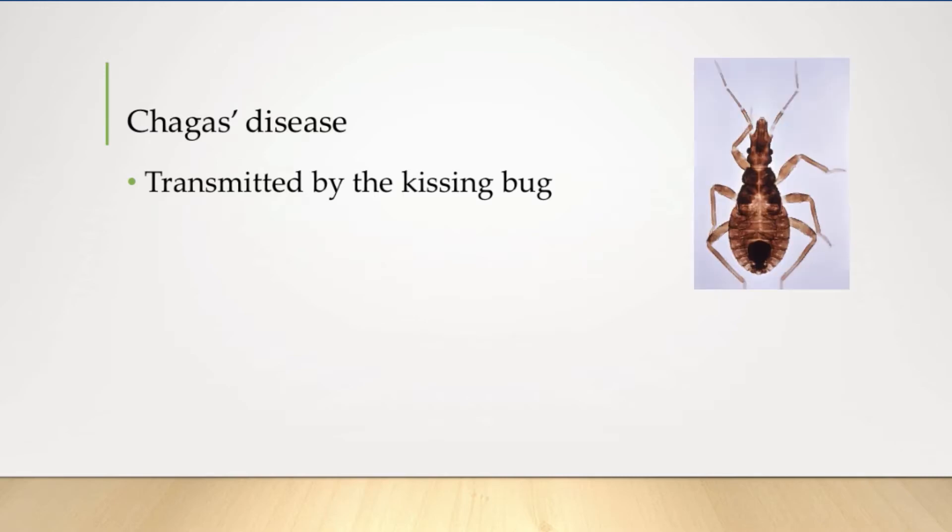Chagas disease is caused by Trypanosoma cruzi, which is transmitted by the kissing bug. The kissing bug is so named because it preferentially feeds near the mouth. The parasite matures in the bug's intestines, which defecates as it feeds, releasing the protozoan and depositing it on the skin near the mouth. The feeding parasite causes the skin to itch, and itching then introduces the parasite into the bloodstream.